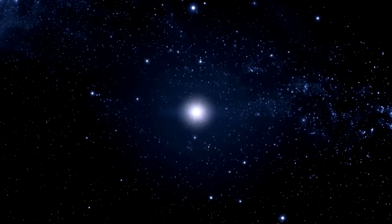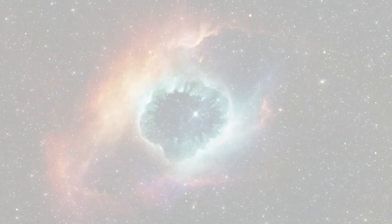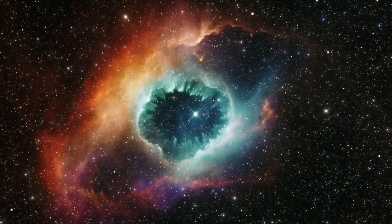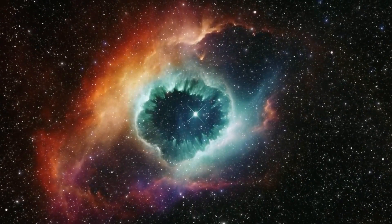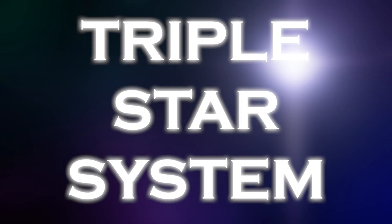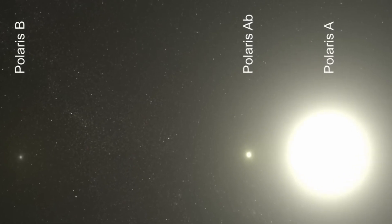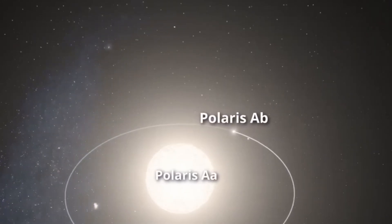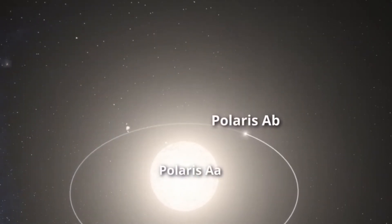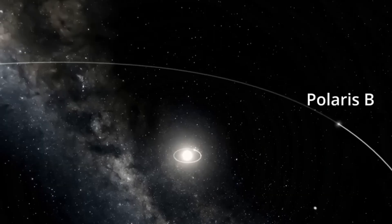Polaris is a star of moderate brightness that stands out as a yellow-white supergiant of considerable dimension compared to our Sun. Despite its appearance as a lone star, it is actually part of a rather complex triple star system. Within this system, the primary stars are Polaris AA and Polaris AB, which when seen with the naked eye, look like a single star.